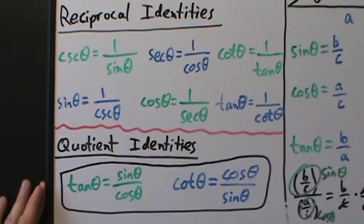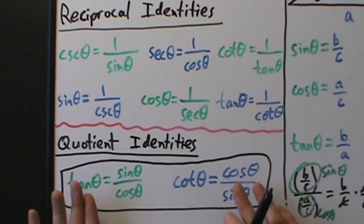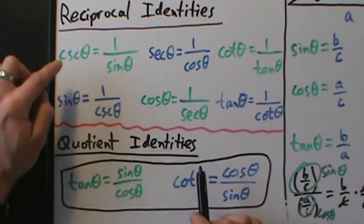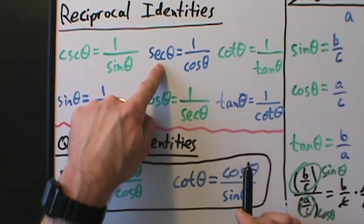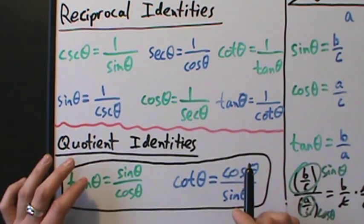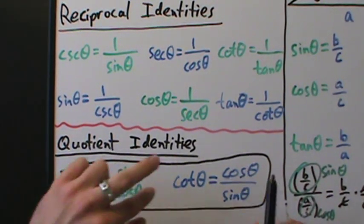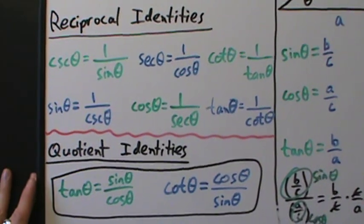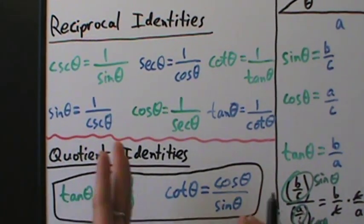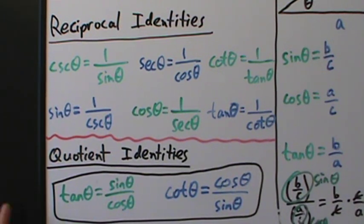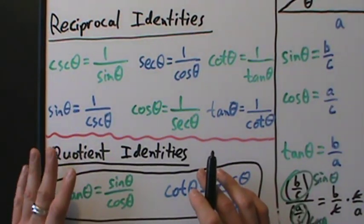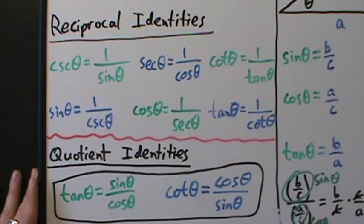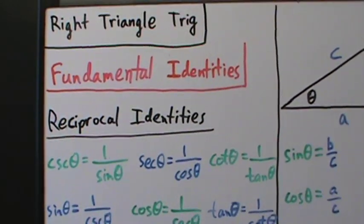If you know sine of theta and cosine of theta, you've pretty much got all the other trig functions. From sine you can get cosecant, from cosine you can get secant — that's already four trig functions. Divide sine by cosine to get tangent, then take the reciprocal to get cotangent. You can actually know less than that and still get all six. We'll explore that in later videos, but in the next video we'll talk about the Pythagorean identities. That's it for reciprocal and quotient identities.